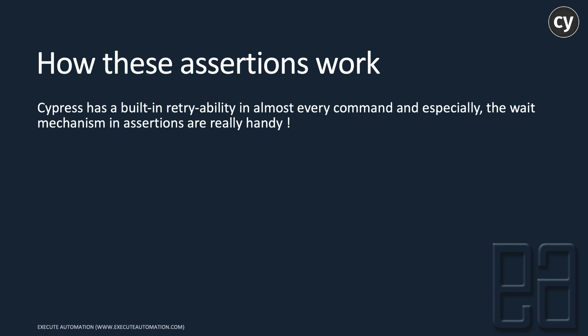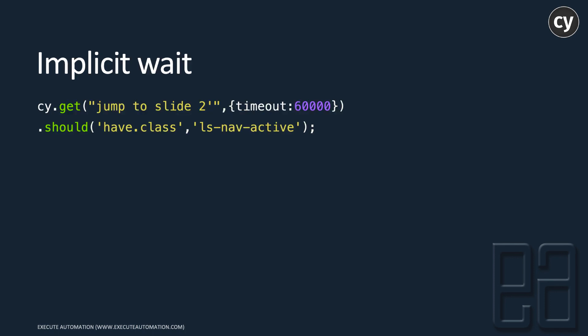Cypress has a built-in retry ability in almost every command, and the wait mechanism in assertions is very handy. For implicit wait using `should`, you get an element, specify a timeout option for the `get` method, then call `should` with `have.class` to verify if the class exists. Here we're waiting for the slider to appear and verifying it has the class `ls-nav-active`.